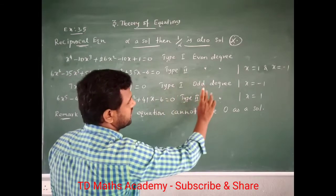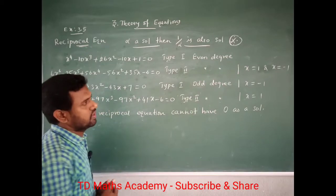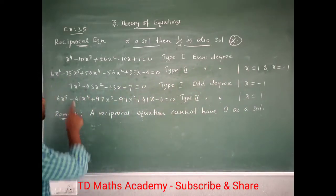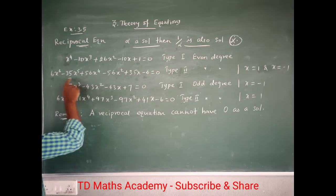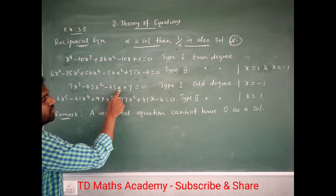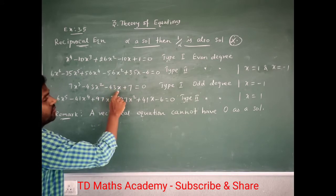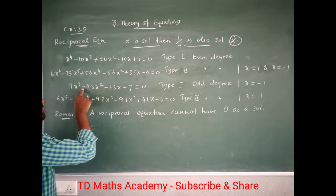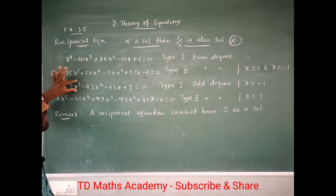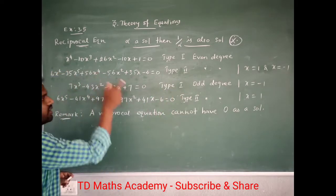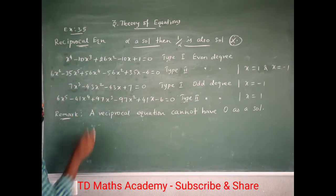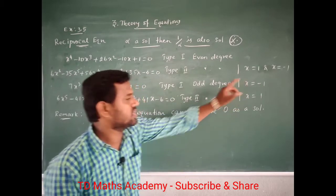For Type 1 odd degree: if I substitute x equal to minus 1, all the terms with negative signs cancel out. Minus 1 substituted gives minus 43 plus 43 — they cancel, giving 0. So for Type 1 odd degree, x equal to minus 1 is automatically a solution.